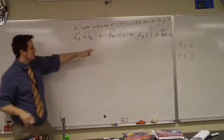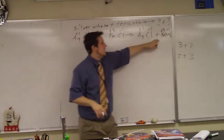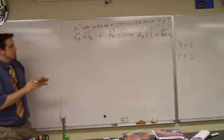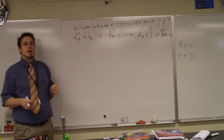So if you have these switched around, as long as the Ag is with the Cl and the iron is with the nitrate, we're okay. So we've written the reactants and the products. Now we have to do what?